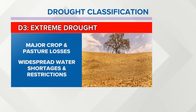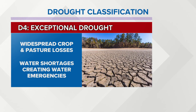And then finally, extreme drought — this is what's happening in much of California and Nevada. We're looking at major crop and pasture losses, widespread water shortages and restrictions out there. Exceptional drought gets even worse: widespread crop and pasture losses, water shortages creating water emergencies. That is certainly happening in parts of California, and of course they have all the fires out there. So I hope that helps explain exactly what those categories mean.